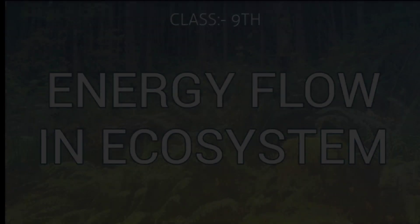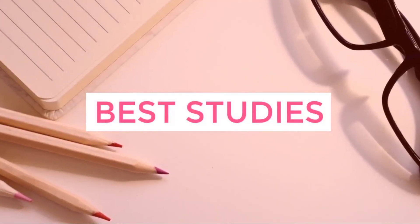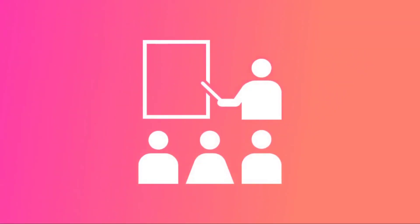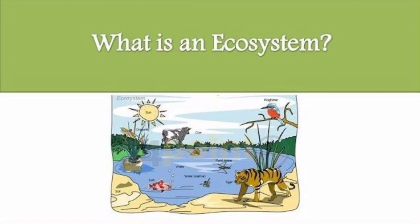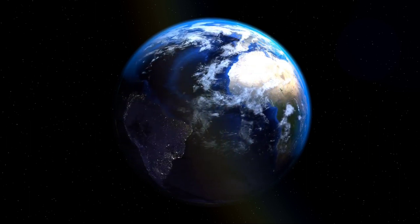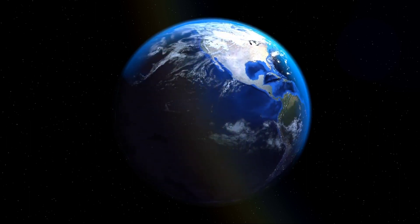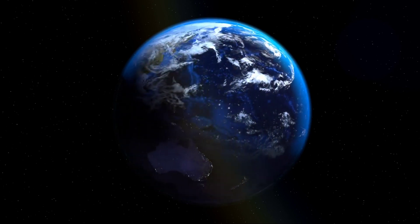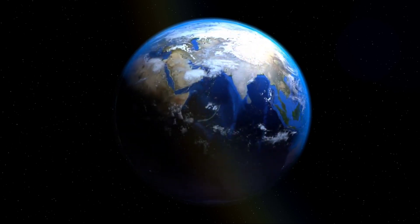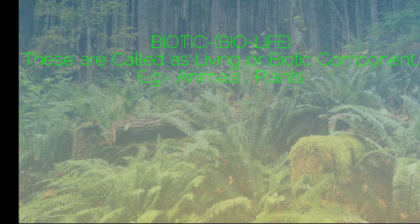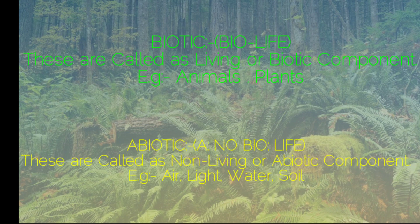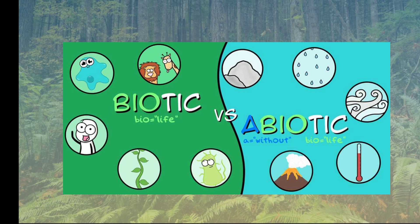So what is ecosystem? There are two major components on Earth: biotic and abiotic. Biotic means living — examples include animals and plants. Abiotic means non-living — examples include air, light, water, and soil. These living (biotic) and non-living (abiotic) components are continuously interacting with each other.